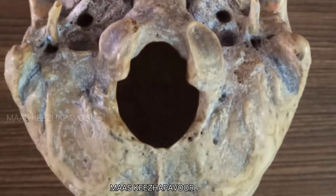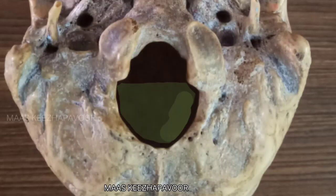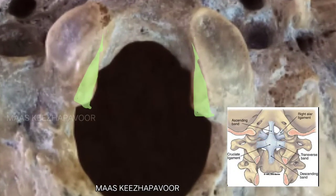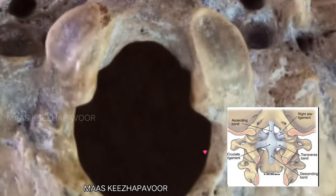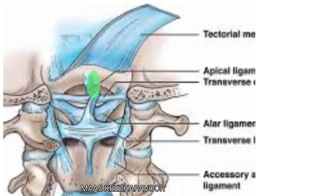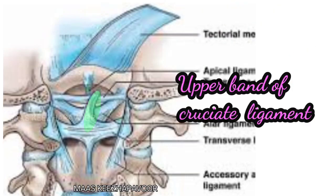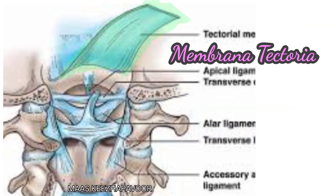The foramen magnum has an anterior narrow part and a posterior wider part. The alar ligament, attached to the tubercle and medial aspect of the occipital condyle, divides the foramen magnum into a smaller anterior compartment and a larger posterior compartment. The anterior compartment transmits the apical ligament, upper band of cruciate ligament, and membrana tectoria.